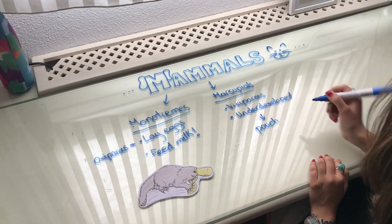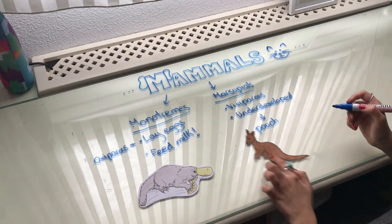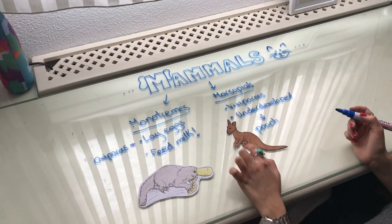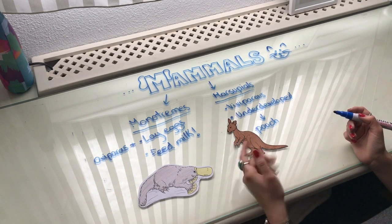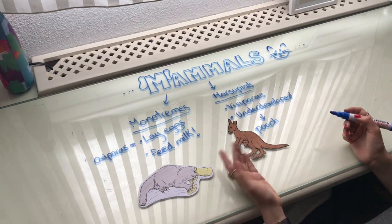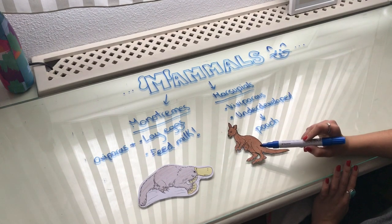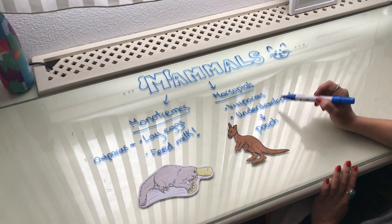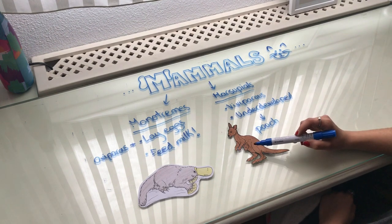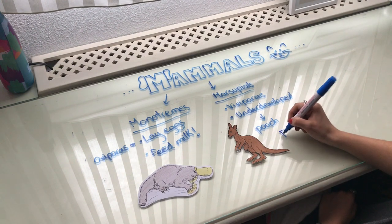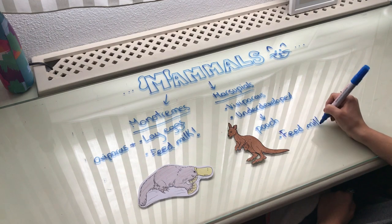A pouch is what kangaroos have — this is the pouch. So they go to the pouch and then they develop inside, and once they are ready they can go out. They are born viviparous, then since they are underdeveloped they live in the mother's pouch, and always remember they are fed with milk from the mother.